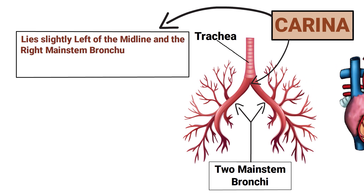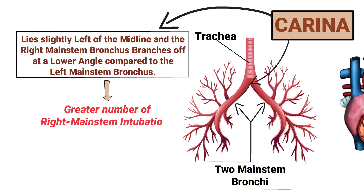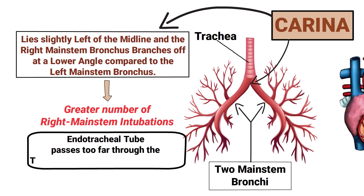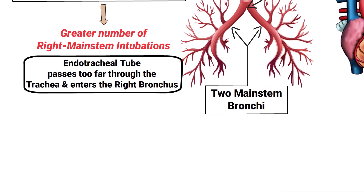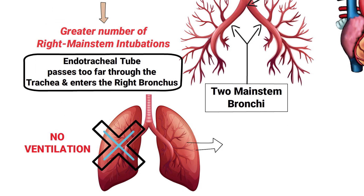The right main stem bronchus branches off at a lower angle compared to the left main stem bronchus. This results in a greater number of right main stem intubations, which occurs when the endotracheal tube passes too far through the trachea and enters the right bronchus.